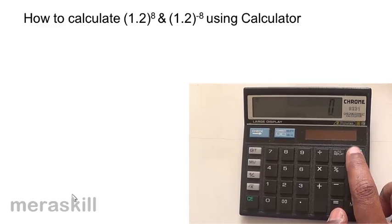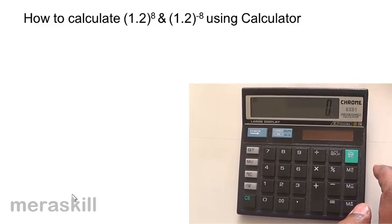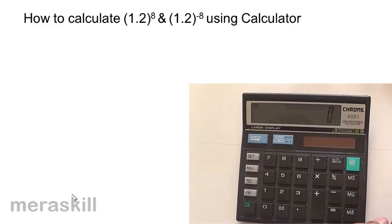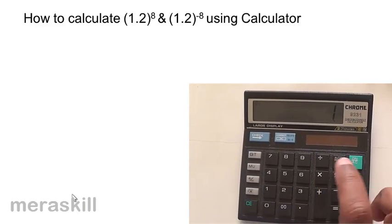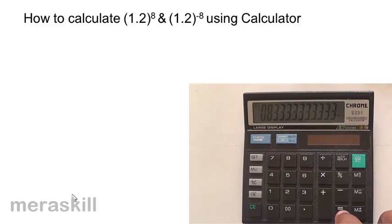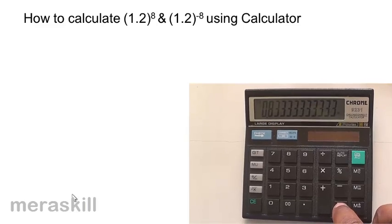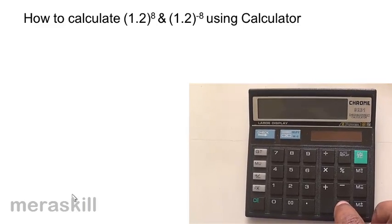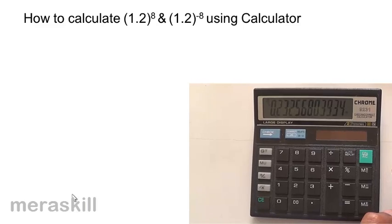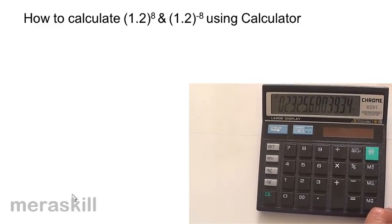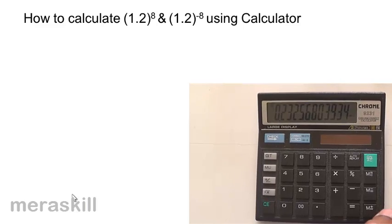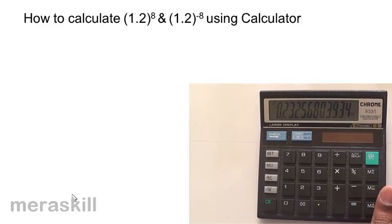Now suppose you need to calculate 1.2 raised to minus 8, which would mean 1 divided by 1.2 raised to 8. In such a case, we take 1, divide it by 1.2, and get 0.833. Then we press equals counting: twice, three times, 4, 5, 6, 7, and 8. This gives 1 divided by 1.2 raised to 8, which is 0.23256803934. Thus we can calculate 1.2 raised to minus 8.